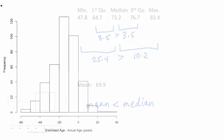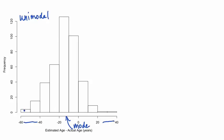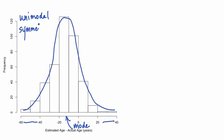Let's look at the histogram for another set of data — the differences between the estimated ages using the Daganji method and the actual ages at death for our 400 skeletons. The distribution of these data is unimodal, with the peak between negative 10 and negative 20 years. Although there may be a few more values in the extremes of the left tail than in the right tail, the distribution is quite close to symmetric about the peak. And there are no outliers.